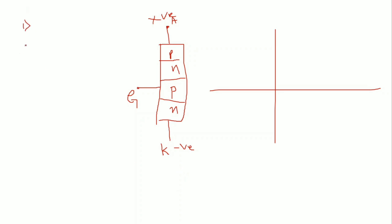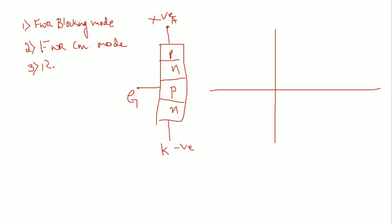In forward bias you have 2 modes of operation, and in reverse bias you have the 3rd mode of operation. The first one is forward blocking mode, the second one is forward conduction mode, and the next one is reverse blocking mode.